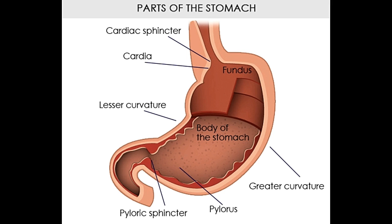The pyloric region of the stomach is divided into the pyloric antrum, a funnel-shaped section that becomes the pyloric canal while approaching the duodenum — the first section of the small intestine. At the end of this canal lies the pyloric sphincter, a ring of muscle fibers responsible for regulating the movement of chyme into the duodenum and determining the rate at which food moves from the stomach to the duodenum.